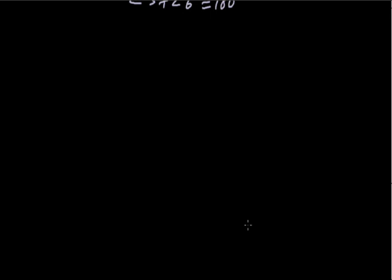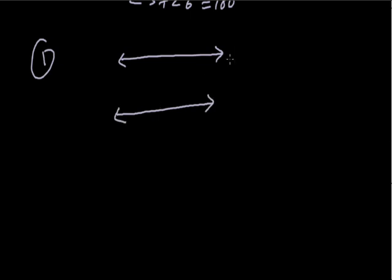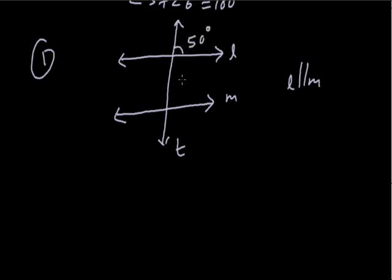Now let's do some problems. In the first problem, lines L and M are parallel with transversal T, and one angle is given as 50°. We need to find all remaining angles. Naming them 1 through 8, angle 4 equals 50° because angles 4 and the given 50° form corresponding angles.